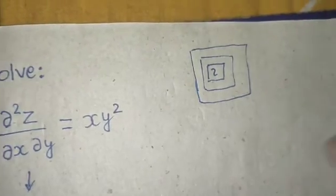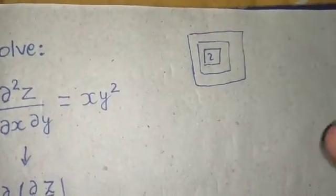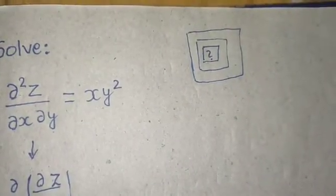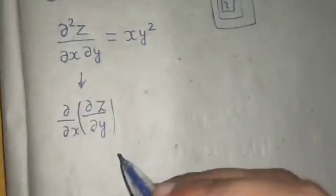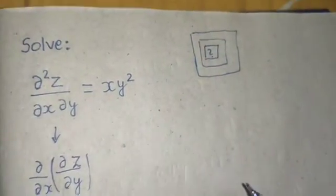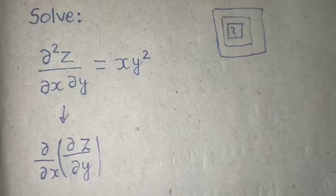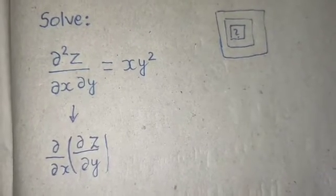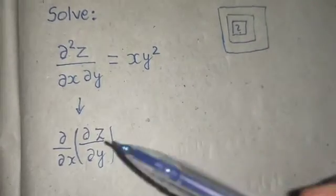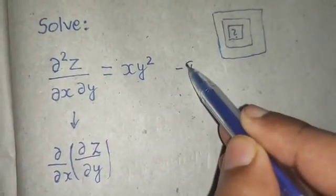If you consider wrapping this gift as differentiation or partial differentiation, then we have to unwrap this to find what Z is, with the help of partial integration. So wrapping is partial differentiation and unwrapping is partial integration. We'll have to unwrap or integrate partially two times in order to get Z. Let's suppose this as equation number one.